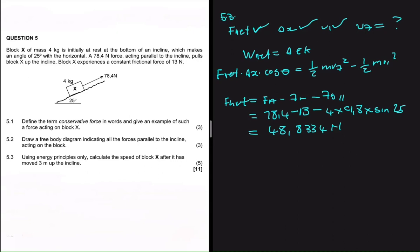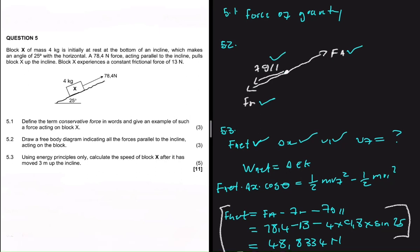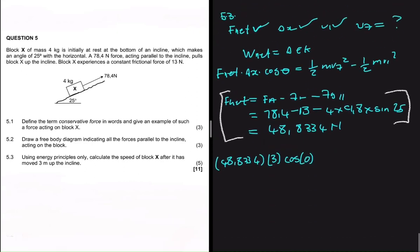Right, so now we can go ahead and substitute in our equation and solve our problem. So f_net - we see that f_net is 48.8334 and then delta x that is three. And then cos of zero - why am I saying cos of zero? So f_net is positive, so that means that it is going up the incline and that's where our displacement is, so the angle between f_net and our displacement is zero.